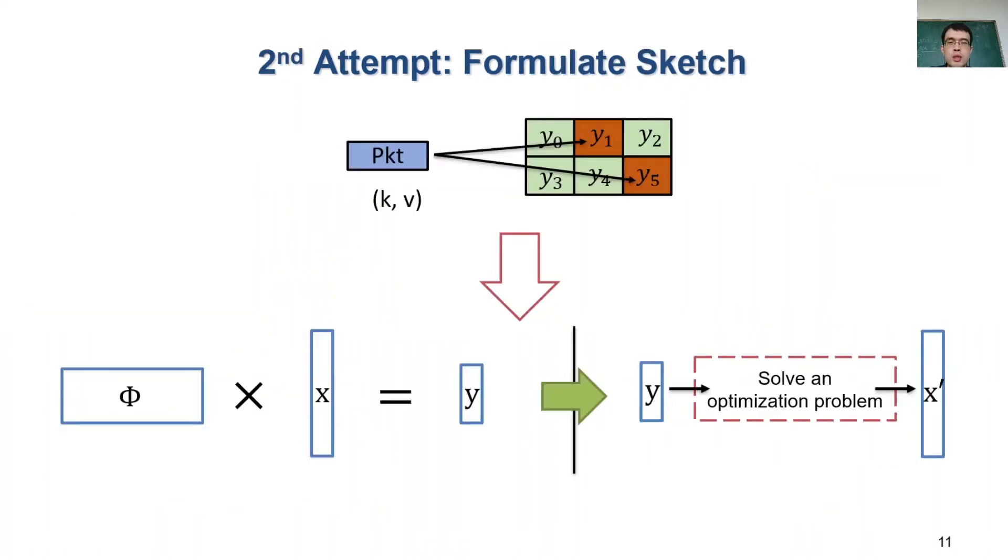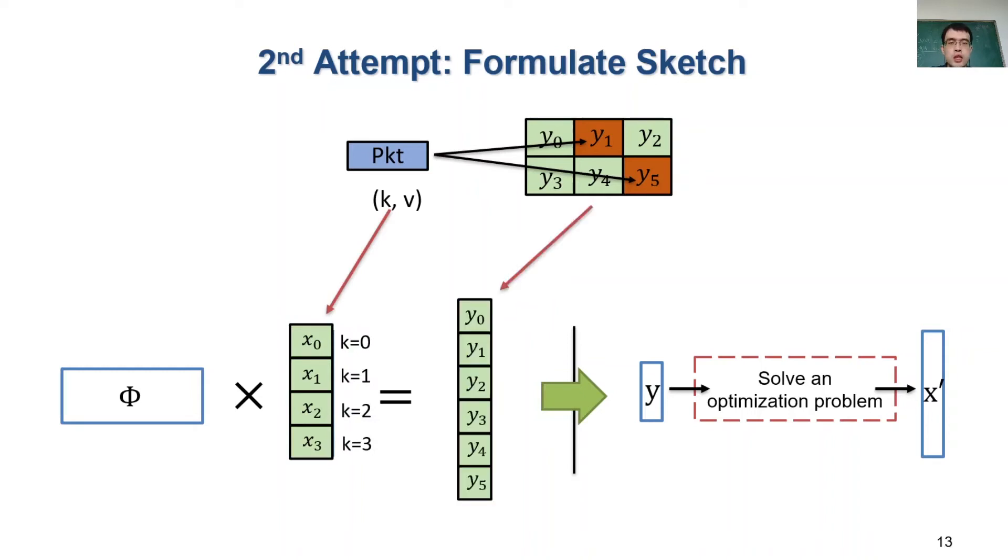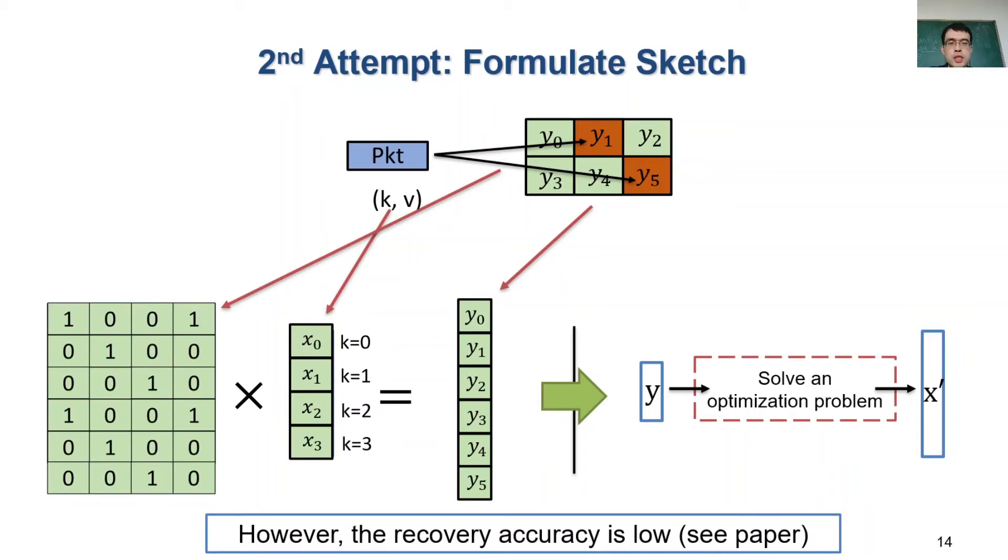So our second attempt is to use a new sensing matrix. We observe that sketch algorithms can be formulated in the same form of compressive sensing very well. Specifically, vector X is the per-flow statistics we want to monitor. And we can assemble all counters in the sketch structure to form the measurement vector Y. Then, we determine the elements in the sensing matrix based on whether a flow is hashed to a counter.